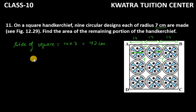Now what do we need to do? We need to remove 9 circular designs from area of square because we need to find area of remaining portion. So the remaining portion will be area of square minus area of 9 circles.